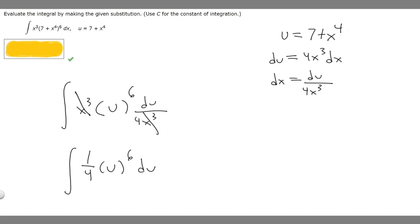Now that we got it like this, we want to find the antiderivative and then plug back in whatever u is. So the antiderivative of 1 over 4 times u to the 6th is going to be u to the 7, because we add 1 to our exponent.